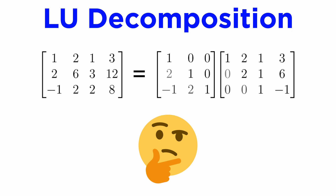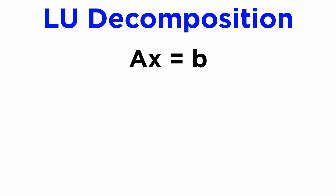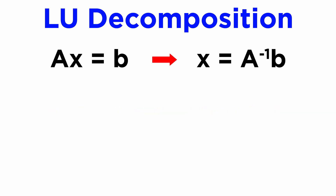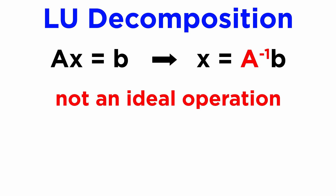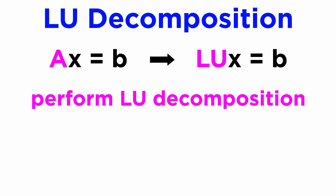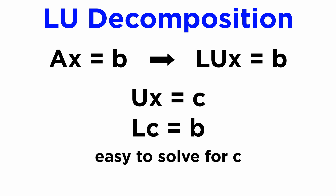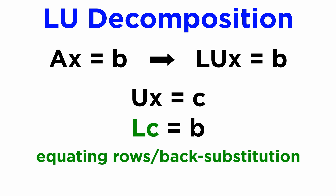Let's talk about what LU decomposition is good for. When faced with an equation of the form AX equals B, where X is an unknown vector and B is a known vector of constants, the obvious solution is to use X equals A inverse times B. But taking a matrix inverse can be very computationally intensive, and so in practice it is not done this way when A is large. Instead, we can first factorize A into LU and then write LUX equals B. We can then write UX equals C, where LC equals B, treating C as its own unknown vector. Because L is triangular, the system LC equals B is very easy to solve by just equating the rows and using back substitution. No inverse matrices are required to find C.